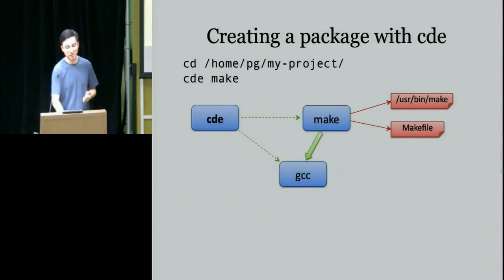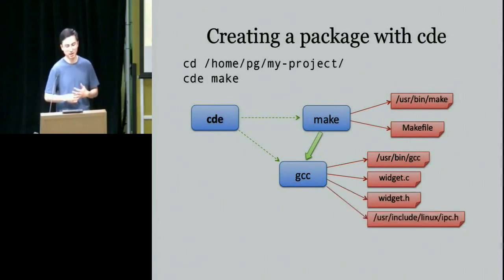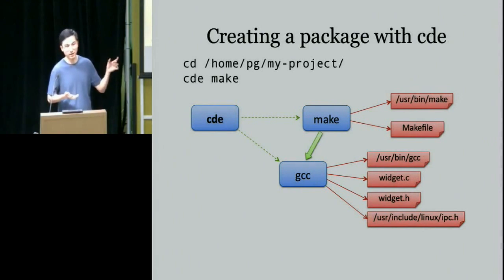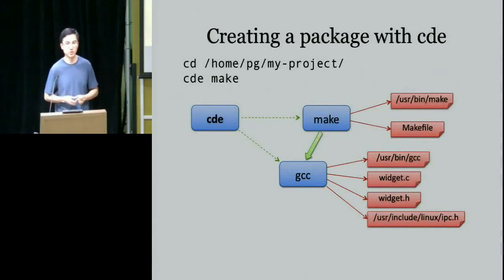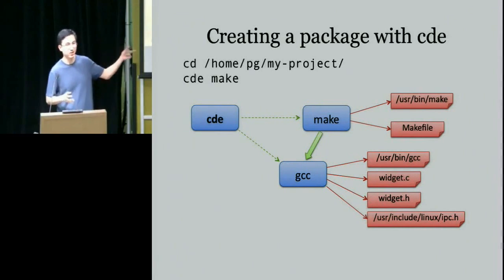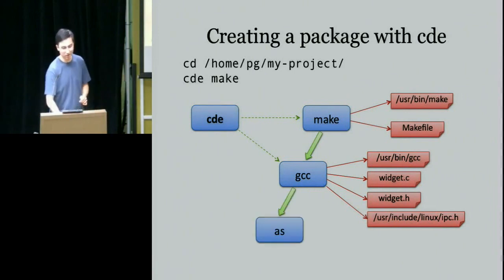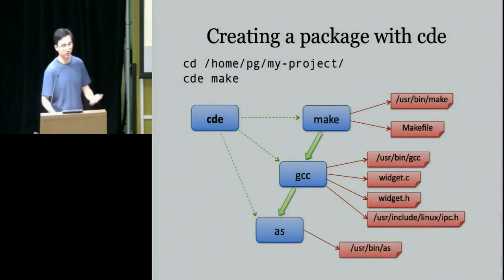Make spawns a sub-process, GCC, to do compilation. CDE attaches onto the child. GCC loads C files, H files — it's a pretty standard compilation job. Interestingly, GCC not only loads source files from the project directory but also sometimes loads system-wide header files. Anyone who's ever tried to get someone's source code and compile it on a different Linux distribution knows that header files are often incompatible across distributions. With CDE, we package up the exact headers needed for the compilation, so there's no conflict no matter what machine you move it to. GCC might also spawn the assembler, and CDE attaches onto all of them.